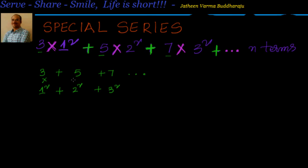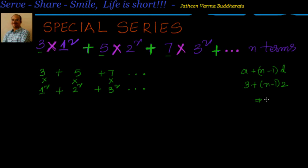We multiply 3·1², 5·2², 7·3², so aₙ will be the product of the nth terms of these different series. For 3 + 5 + 7, the nth term is a + (n−1)d, which gives 3 + (n−1)·2 = 2n + 1. You can check: n=1 gives 3, n=2 gives 5, n=3 gives 7. So 2n+1 is correct.